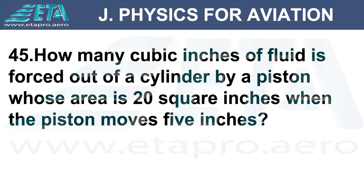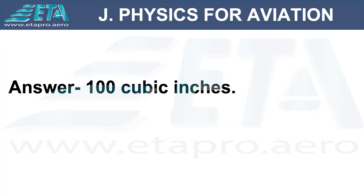How many cubic inches of fluid is forced out of a cylinder by a piston whose area is 20 square inches when the piston moves 5 inches? Answer: 100 cubic inches.